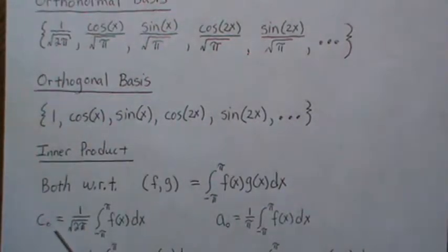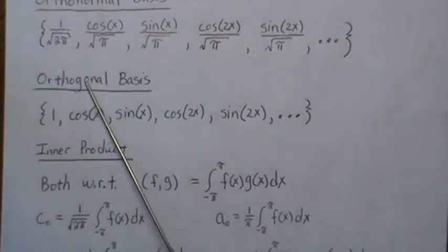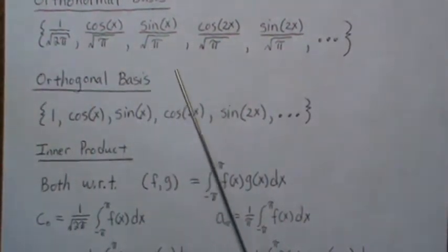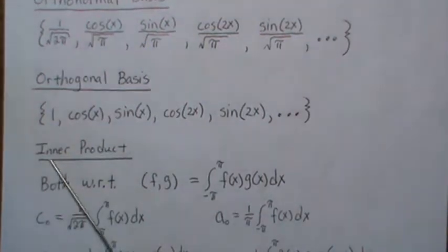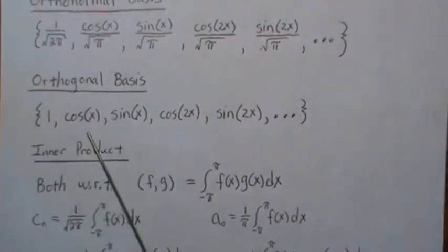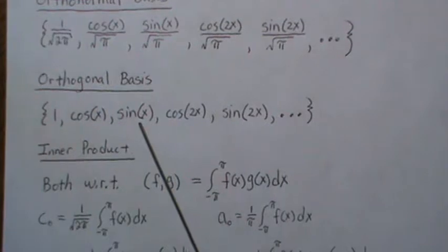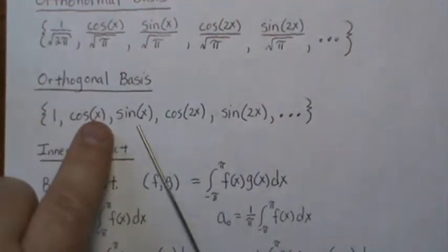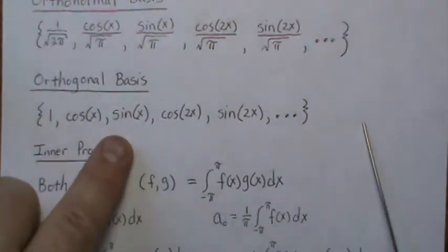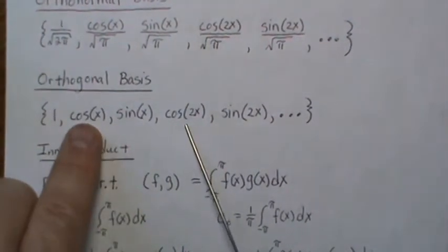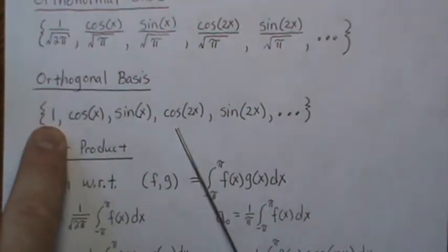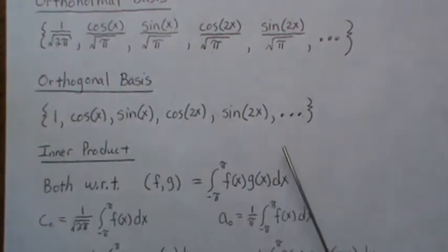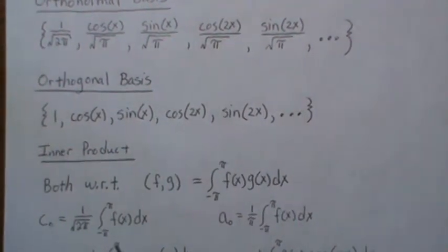We develop a Fourier series for both the orthogonal and orthonormal bases and compare. The C's are C_0, C_1, C_2, C_3, C_4, C_5, and so on. The original series uses A_0, A_1, B_1, A_2, B_2, and so on — where the sines had coefficients B_N, the cosines had A_N, and the constant term was A_0. All of these correspond to C_0, C_1, C_2, C_3, C_4 in the orthonormal indexing.